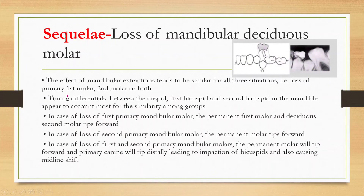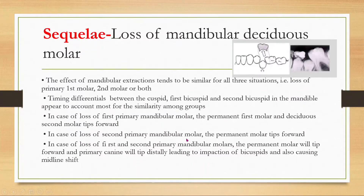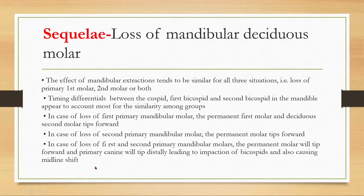The sequelae of loss of mandibular deciduous molars tend to be similar for all three situations — loss of the primary first molar, second molar, or both. In the case of loss of the first primary mandibular molar, the permanent first molar and deciduous second molar tip forward. In loss of the second primary mandibular molar, the permanent molar tips forward. When both are lost, the canine tips distally, leading to impaction of bicuspids and midline shift.